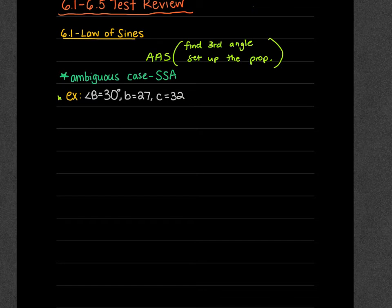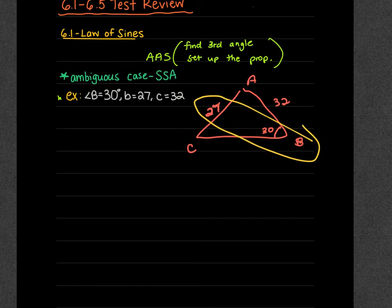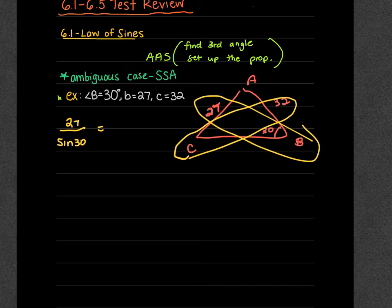This is a side-side-angle case. If I draw this out — A, B, C — I have 30 degrees, side B which is 27, and side C which is 32. That's two sides and the non-included angle, which is SSA — a case that could be one triangle, no triangle, or two triangles. I start by finding the first angle using the complete ratio in B: 27 over the sine of 30, and then set up C which is 32 over the sine of angle C1.